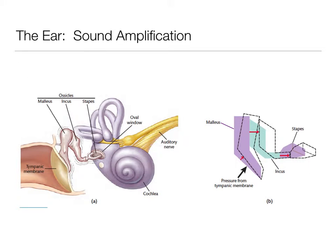Again, the ossicles are the malleus, the incus, and the stapes — they act as a kind of lever. The pressure from the tympanic membrane hits the malleus, which then hits the joint of the incus, which then hits the joint at the stapes, and it further amplifies it and pushes harder onto that oval window of the cochlea. This amplification is needed because the sound has to travel through the fluid inside the cochlea versus the air it was traveling through before.